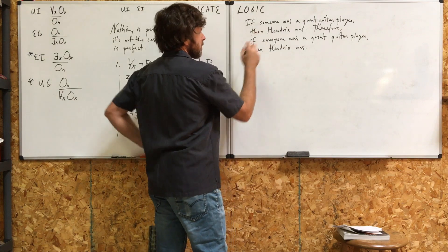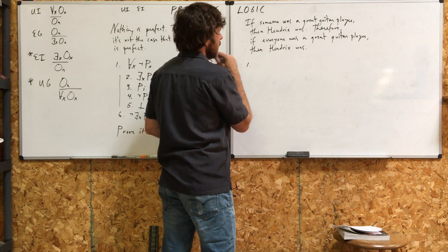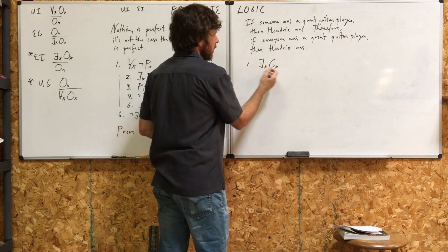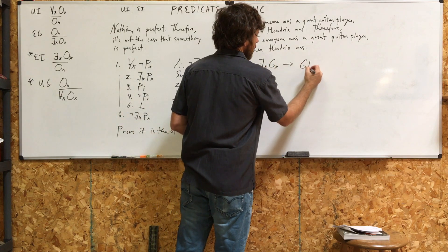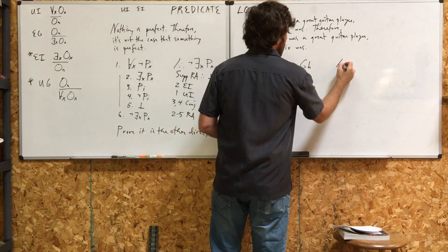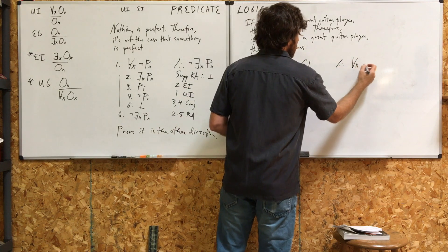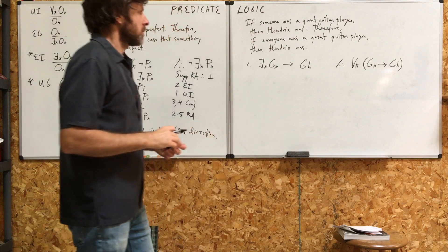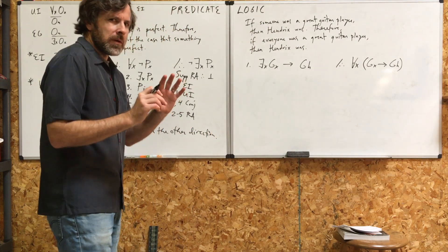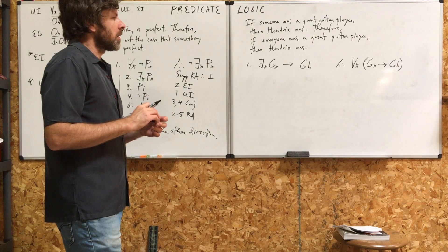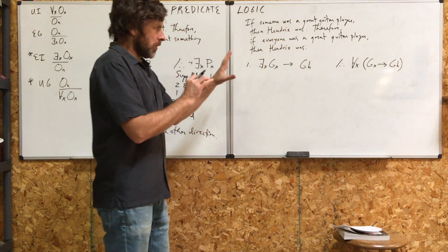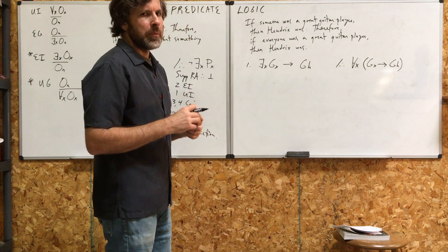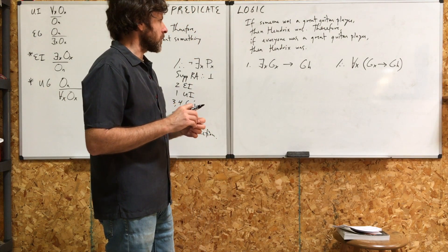Let's translate, symbolize the first statement here, the premise. If someone was a great guitar player, at least one thing is G, you could say here, then Hendrix was. Now, you might be a little iffy with the translation, the symbolization. I'm just going to take it this way for now. I'm just following the way the book translates it. Translate a little differently if you want to. If you want to put a parentheses here, take away the parentheses right there, and see if you could prove it equally. But let's prove it this way first.